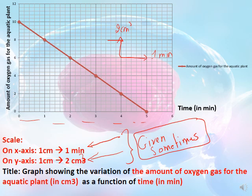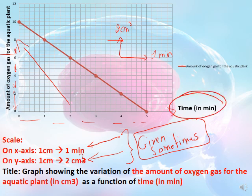If we don't have the value two on the y-axis, we cannot move zero, four, then six, then eight — we must move step by step: two by two. The title for the x-axis, y-axis, and the overall graph are all required. The graph title would be: 'A graph showing the variation of the amount of oxygen gas for the aquatic plant in centimeter cubes as a function of time in minutes.' The graph must be drawn in pencil on graph paper — make sure you have graph paper for your exam. Good luck!